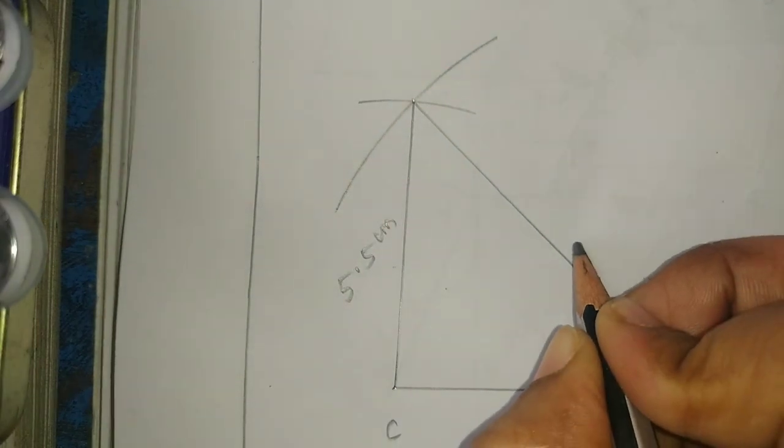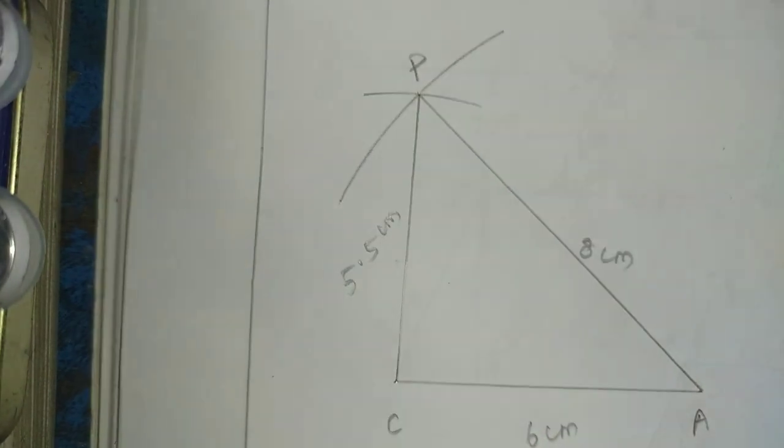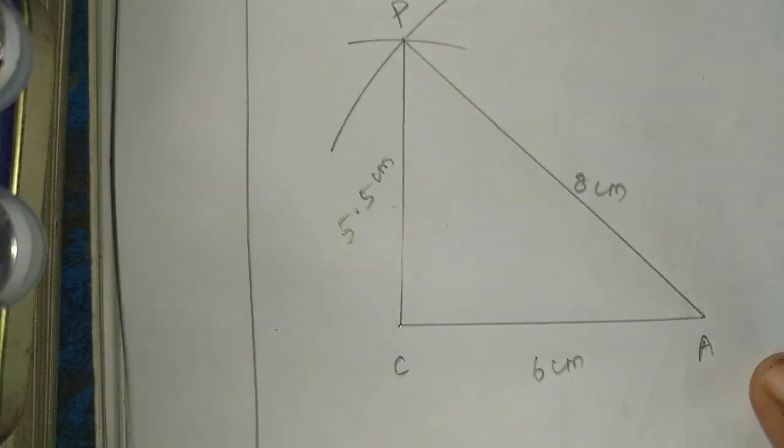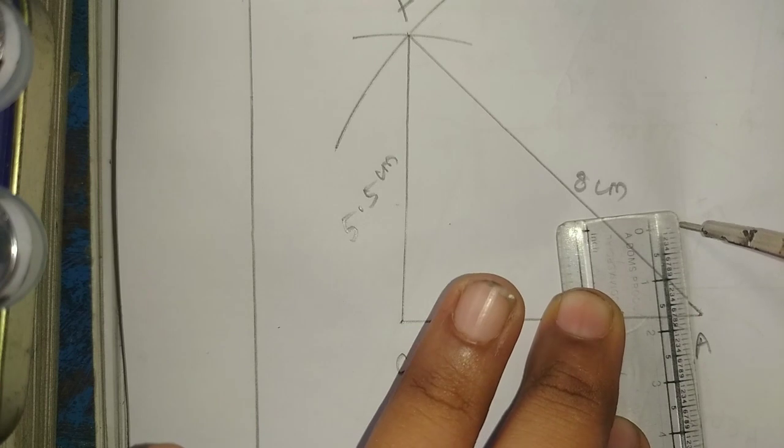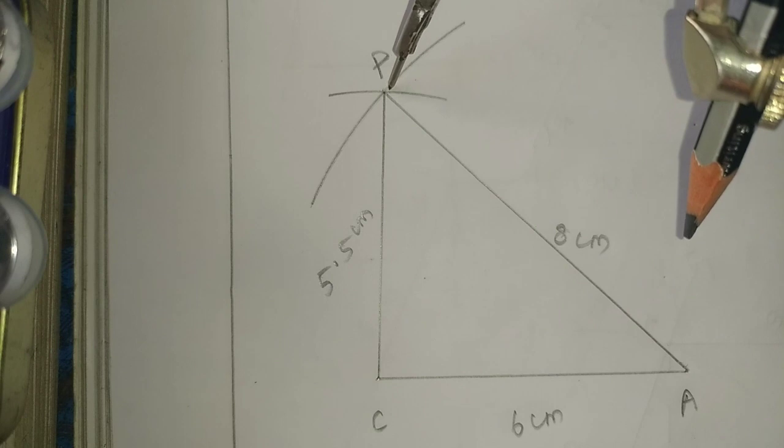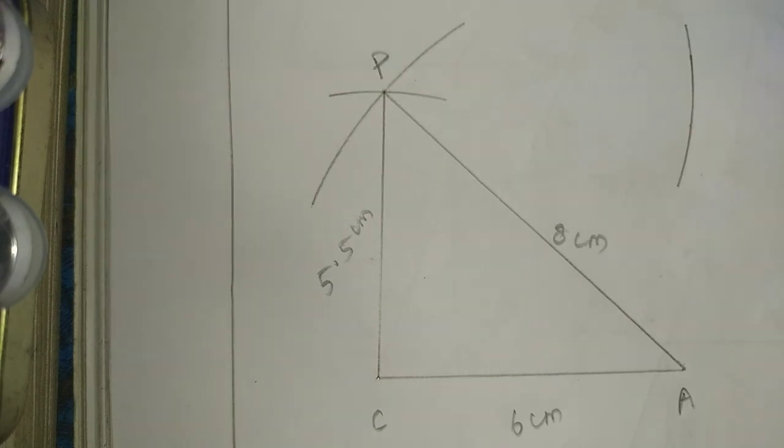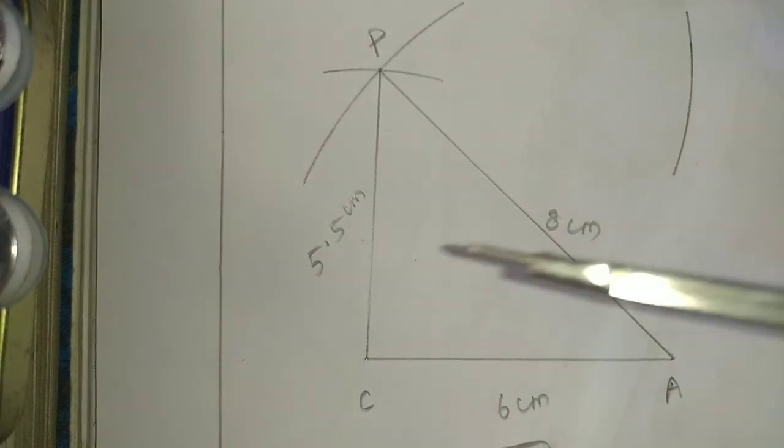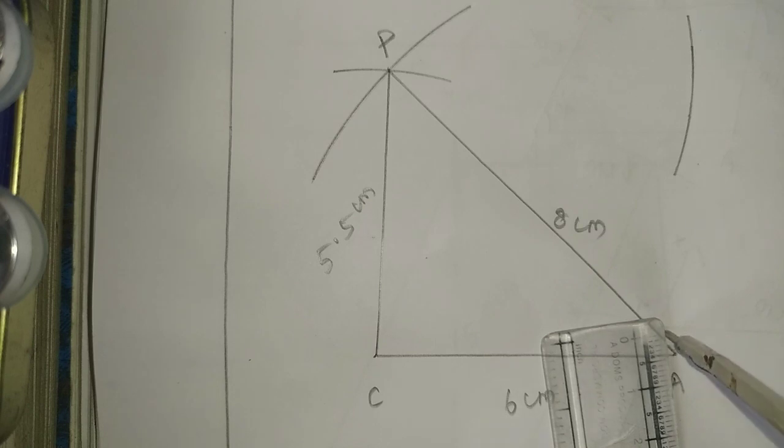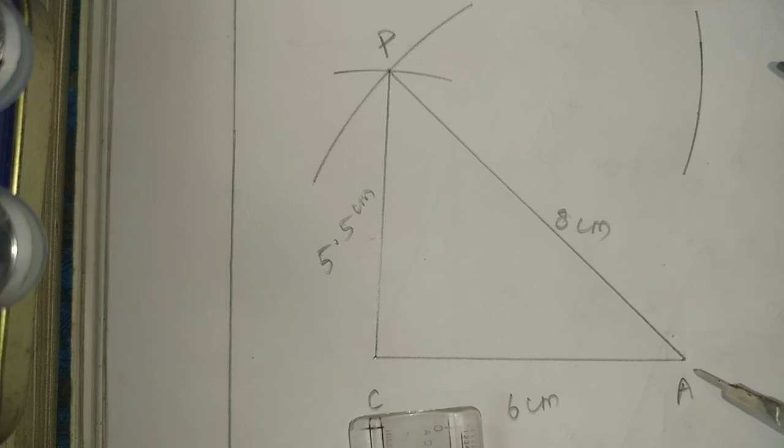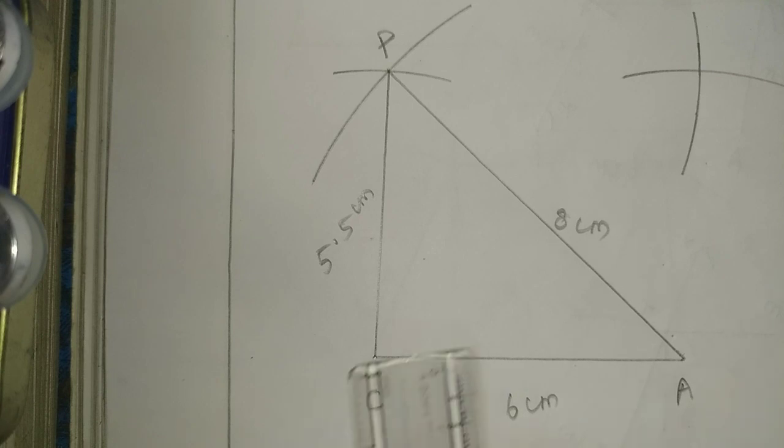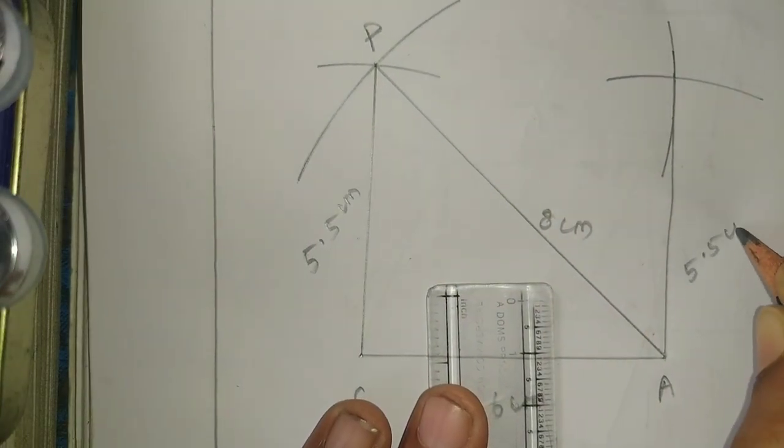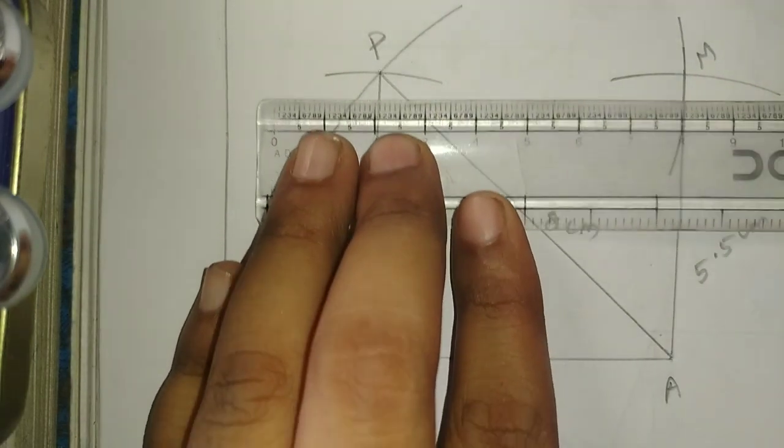8 cm CA to M to PA. Now the parallelogram means opposites are equal. So base side values are opposite. CP values are present. First base value 6 cm from P, 6 cm. Next 5.5 from A, 5.5. Now join.